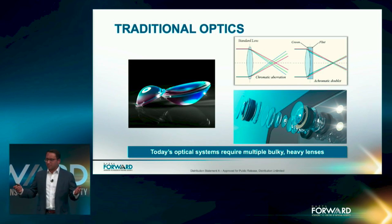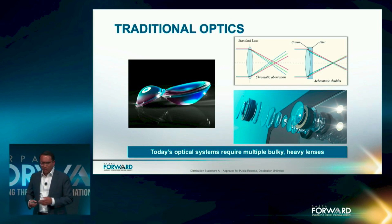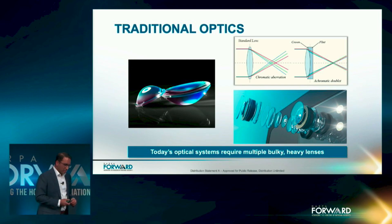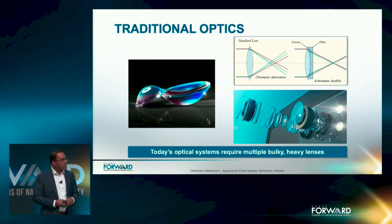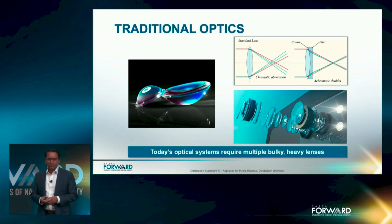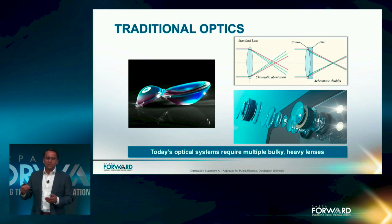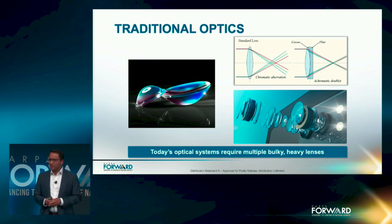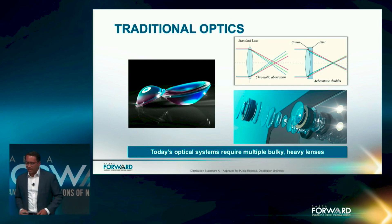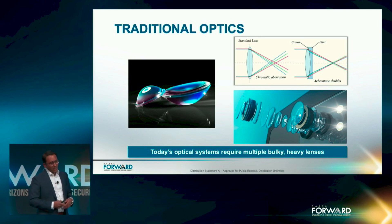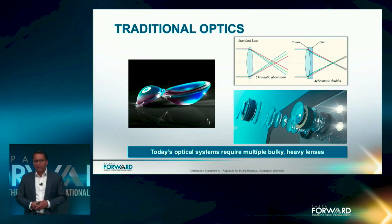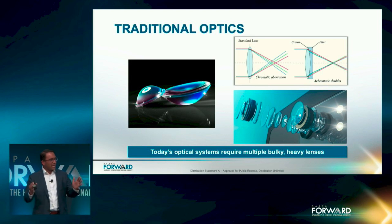If you look at any imaging system — whether it be a telescope, microscope, or a camera — it almost always has tens or fifteen lenses in them. As you look at the top right of the graph, a single lens works pretty well at a single wavelength, let's say green light. But if we send blue or red light through that same lens, performance deviates, leading to distortions or aberrations where different frequencies focus at different points, producing an imperfect image. Traditionally, we add additional lenses with different shapes and materials to correct these distortions and stack the wavelengths together to get that crisp, perfect selfie.